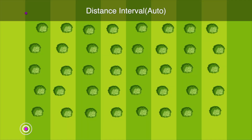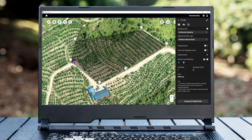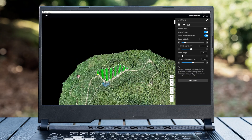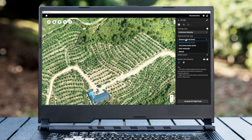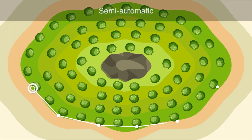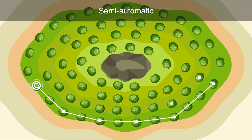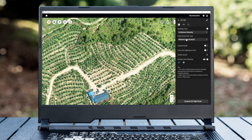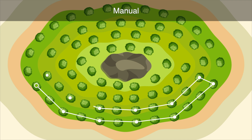Distance interval auto plans boundary points in the orchard and automatically generates 3D routes in the planned area. Tracron center auto plans boundary points and automatically generates 3D routes through tree centers. Semi-automatic manually plans waypoints and DJI Terra automatically adjusts the route to generate 3D routes through the center of the tree according to the position of the waypoints. Manual mode manually plans waypoints and directly generates a 3D route; DJI Terra will not make any adjustments.